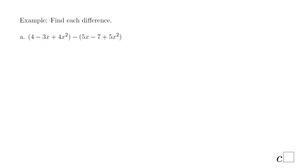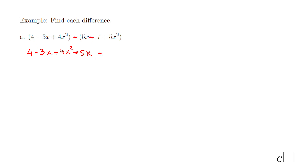The next example shows how to find the difference of two polynomials. Part A: (4 − 3x + 4x²) minus (5x − 7 + 5x²). If you want to eliminate the parentheses, be careful: for the first polynomial we keep it as is, but because we're subtracting, we distribute the minus sign to the second polynomial. So we get minus 5x, and then minus times minus 7 becomes plus 7, and minus 5x² for the last term.